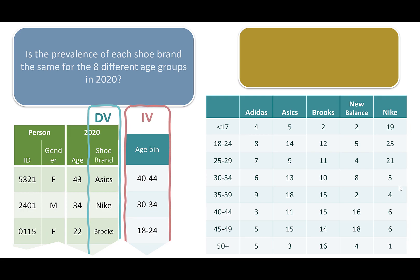Here are the eight age bins and the five different shoe types. If you remember, with parametric tests, when you went from two levels — like male and female — to three or more levels, it changes from a t-test to an ANOVA. Well, that's one of the nice things about frequency and distribution statistics. When we had males and females with shoe brands, it was a chi-square test — and now it's still a chi-square test. The number of levels you have for your independent variable doesn't work the same way as it does for parametric tests when you're dealing with frequency tests like chi-square and test of proportions.